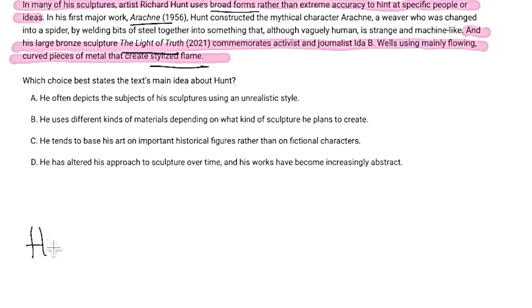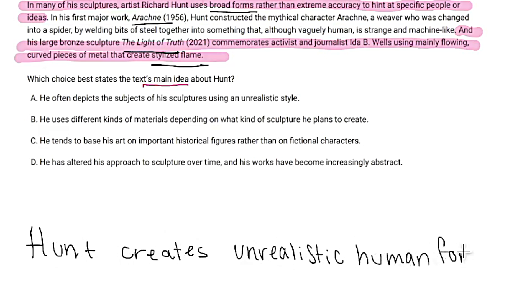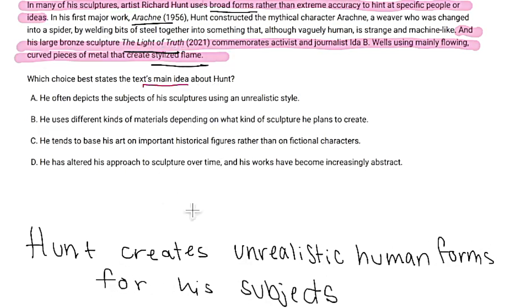So I'm going to say: Hunt creates unrealistic human forms for his subjects. This is literally what you'd want to write in your annotations on Blue Book — there's a little annotation button, or you can use your scratch paper. And now that we have that, we can go into elimination. Answer choice A says: He often depicts the subjects of his sculpture using an unrealistic style. Boom — that matches our annotation perfectly.